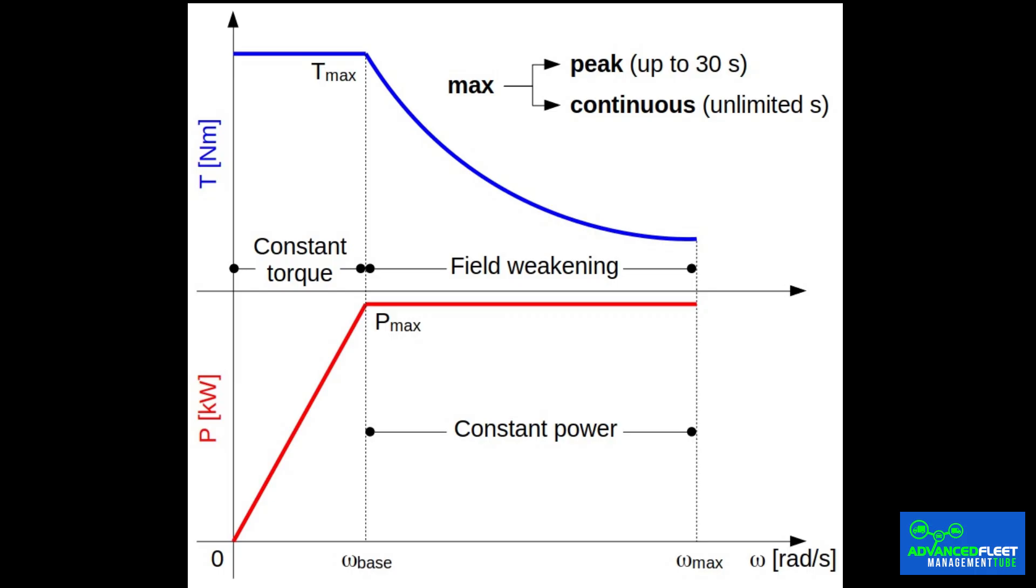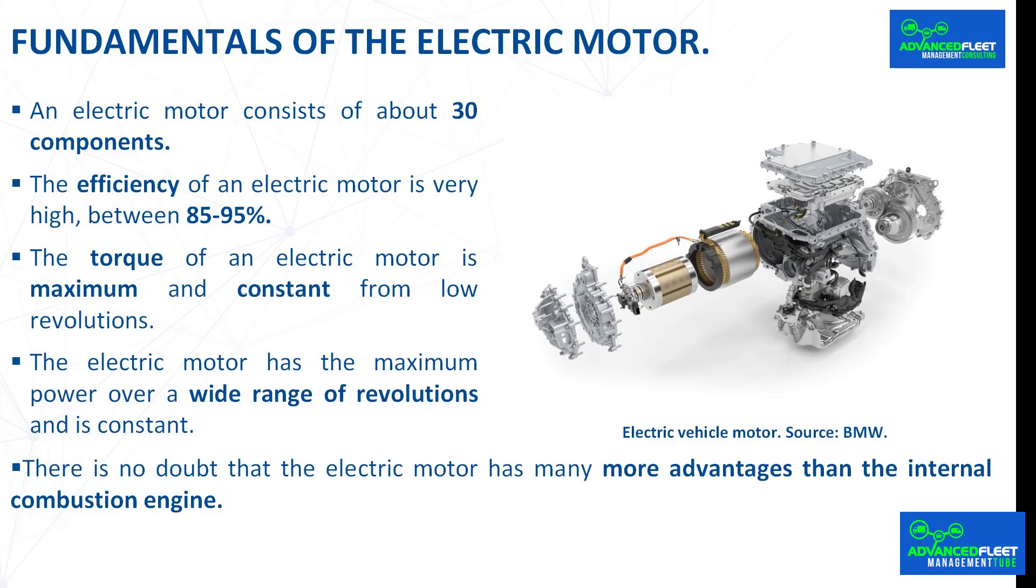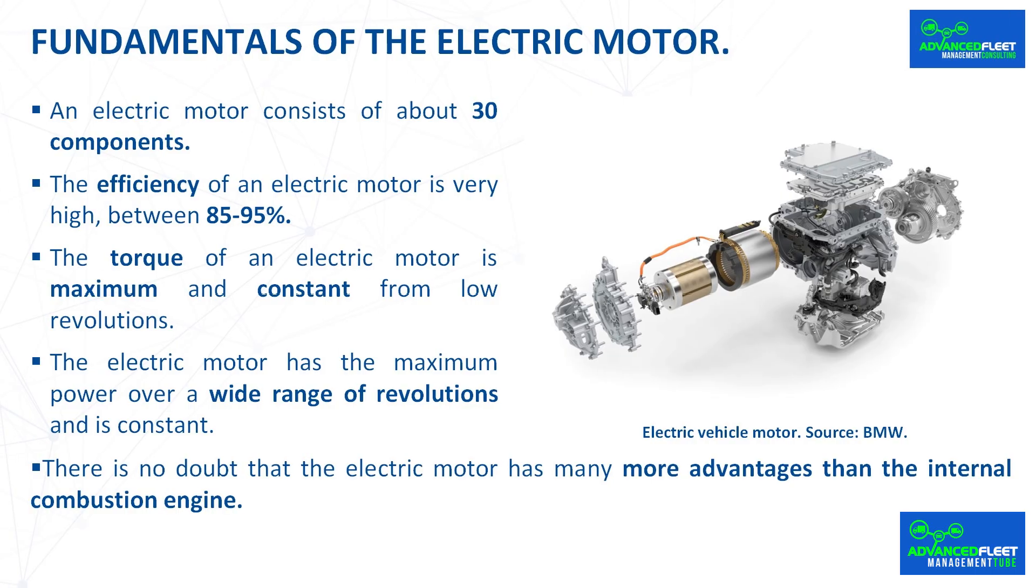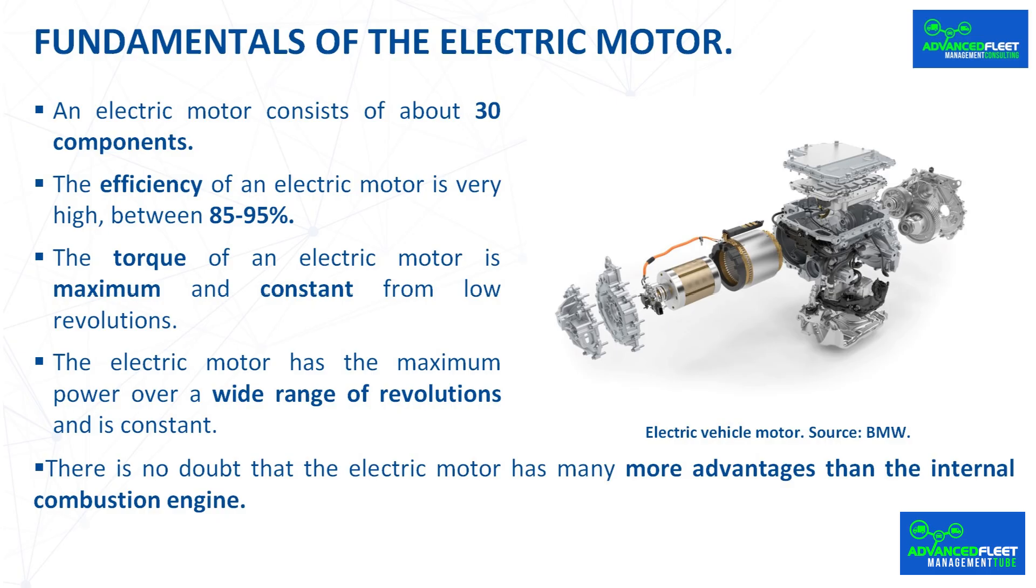The electric vehicle has a gear reduction of revolutions from the electric motor to the wheels and the rotation of the motor is proportional to the rotation of the wheels. The electric motor has the maximum power over a wide range of revolutions and is constant. The internal combustion engine has the maximum power only at certain revolutions. There is no doubt that the electric motor has many more advantages than the internal combustion engine.